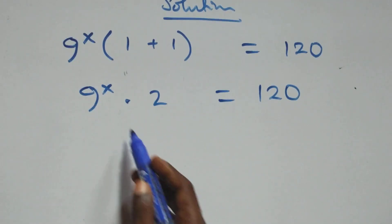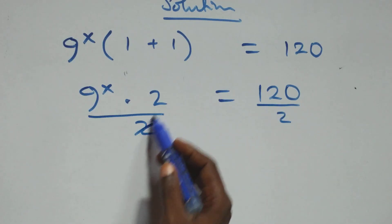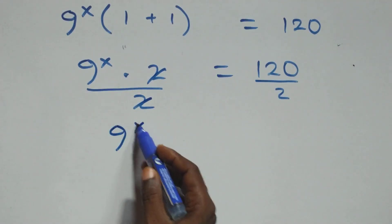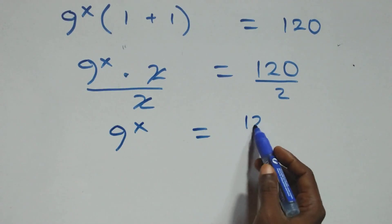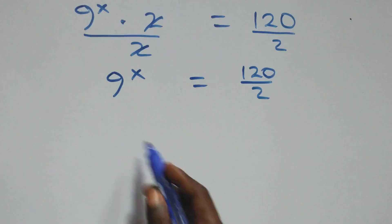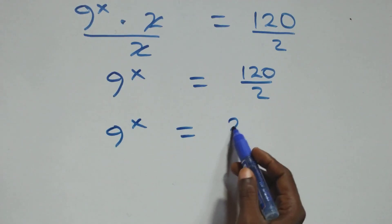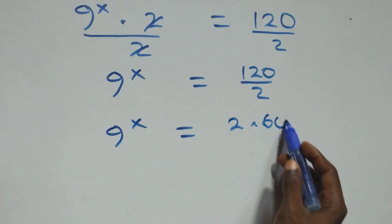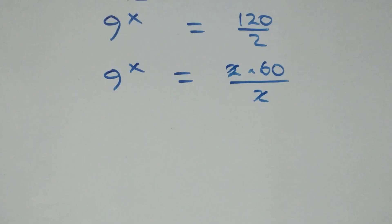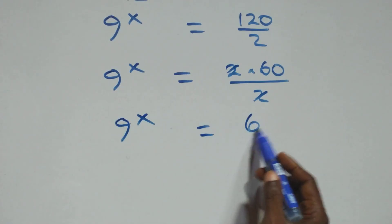The next step we divide both sides by 2. We divide this side by 2 and divide this side by 2, so they cancel each other. And we have 9 raised to the power x equals 120 over 2. We can write 120 as 2 times 60, so the 2s cancel each other, and we have 9 raised to the power x equals 60.